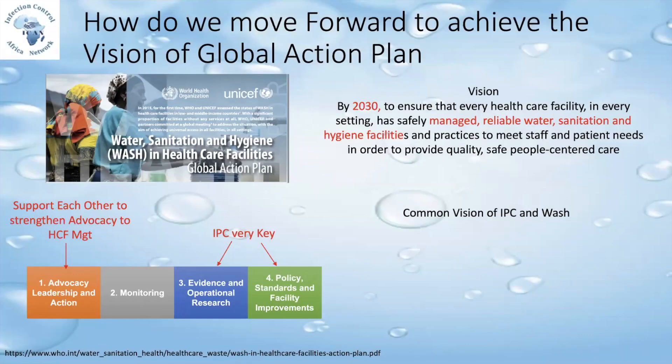And lastly, step four looks at collective advocacy — advocacy at the healthcare facility. One of the things we all face in low-income countries is that WASH problems are issues hospitals don't prioritize, and IPC is not prioritized. So if we work together in advocacy to advocate to our healthcare facility managers, we would get much further. Those who did this, especially during COVID, said they got things done faster than when they had gone individually.